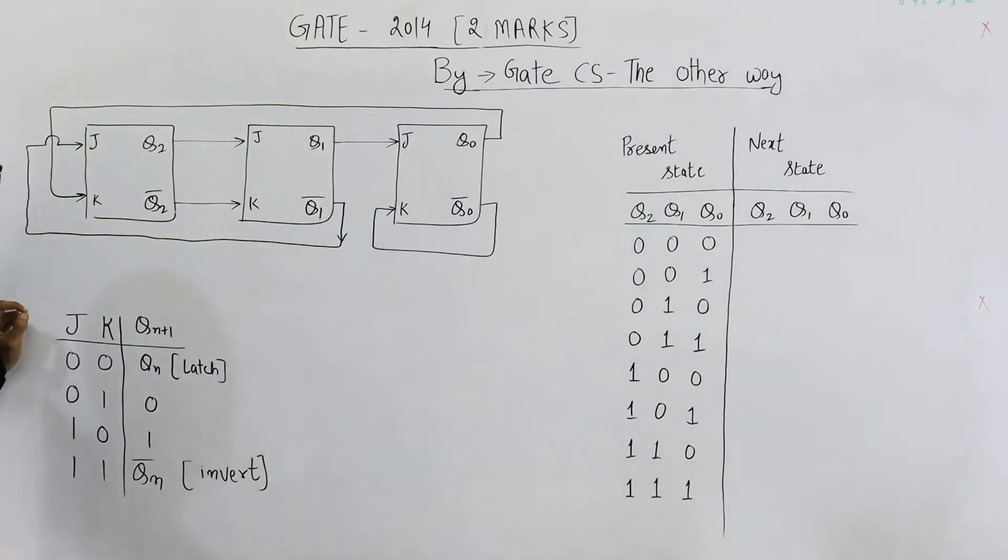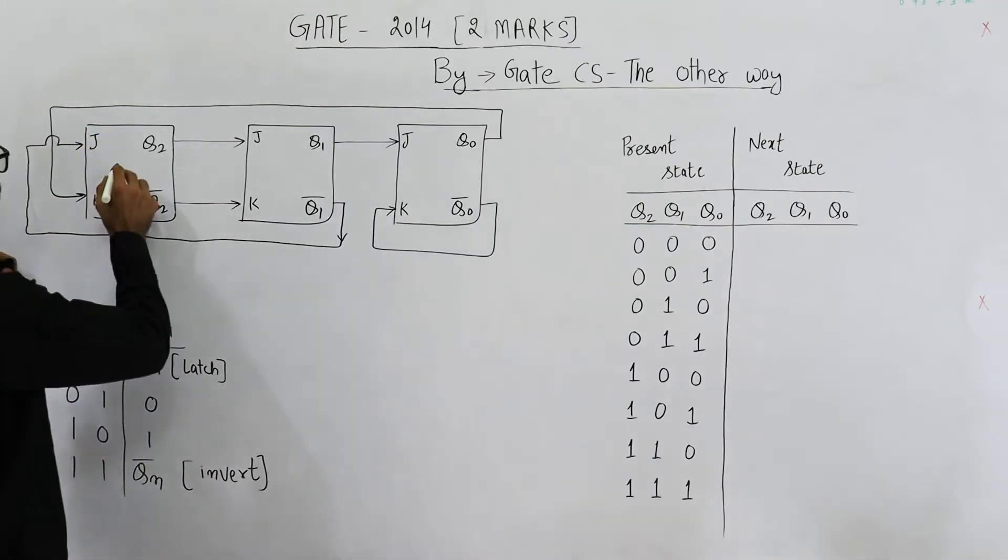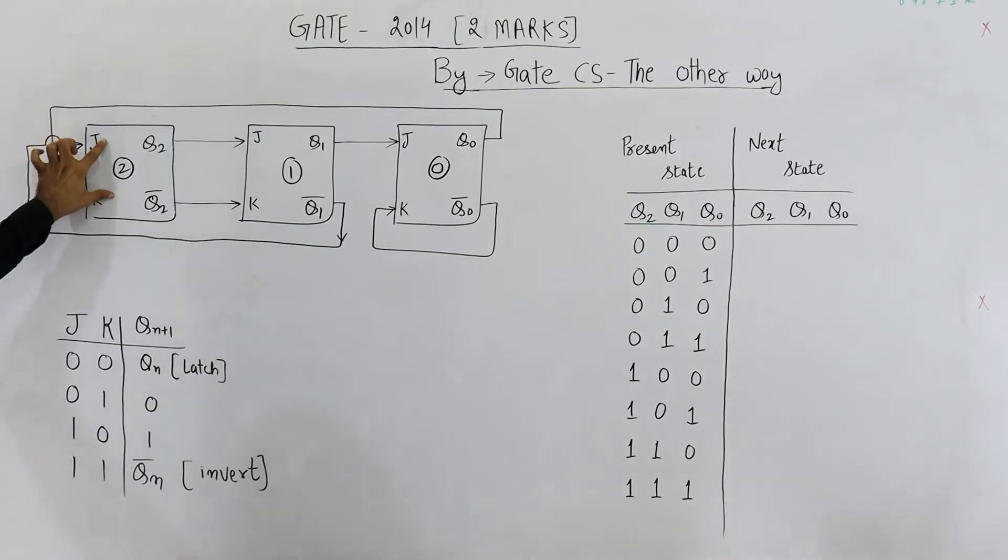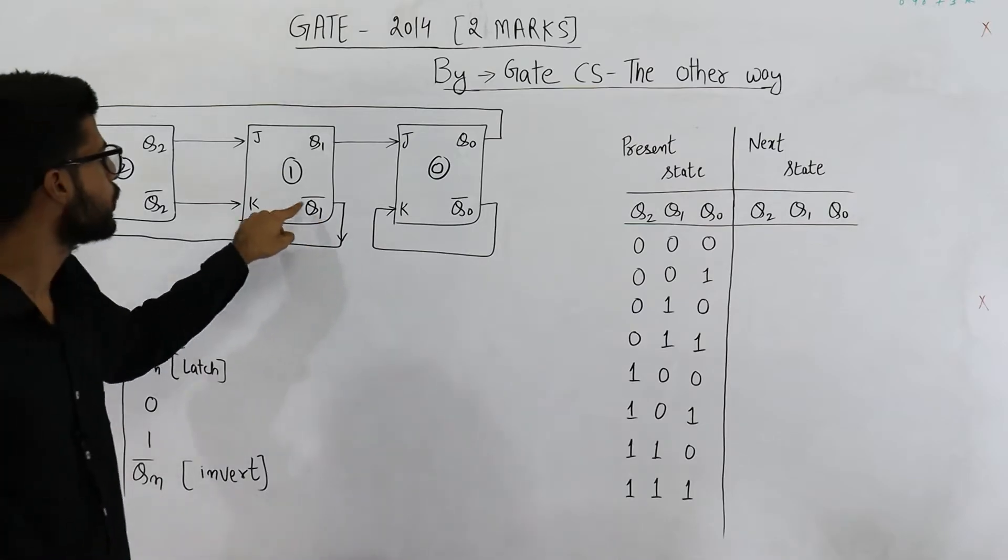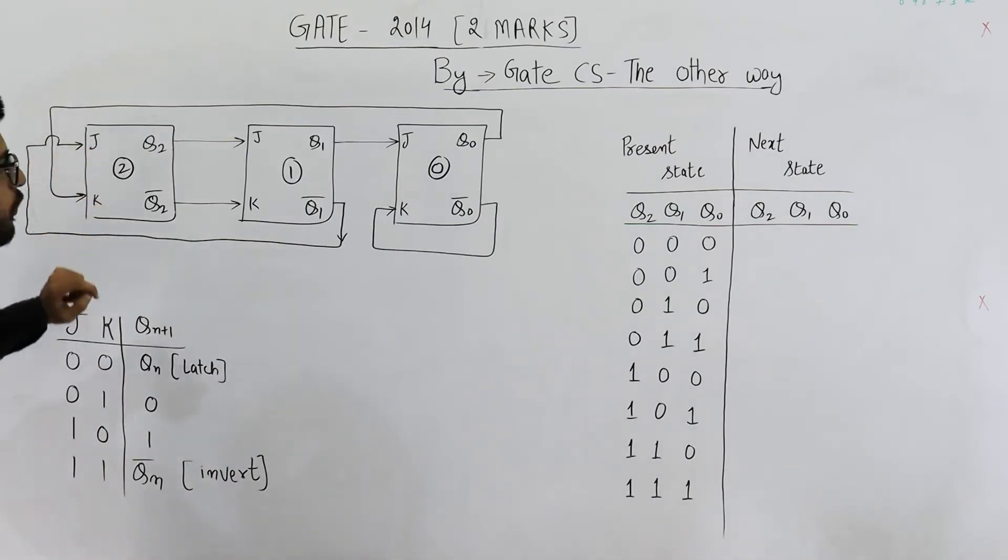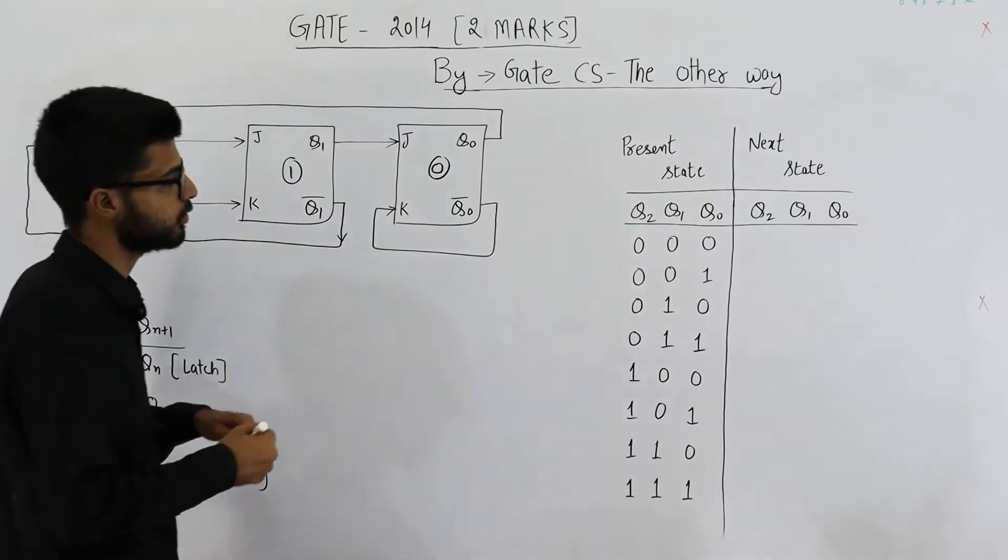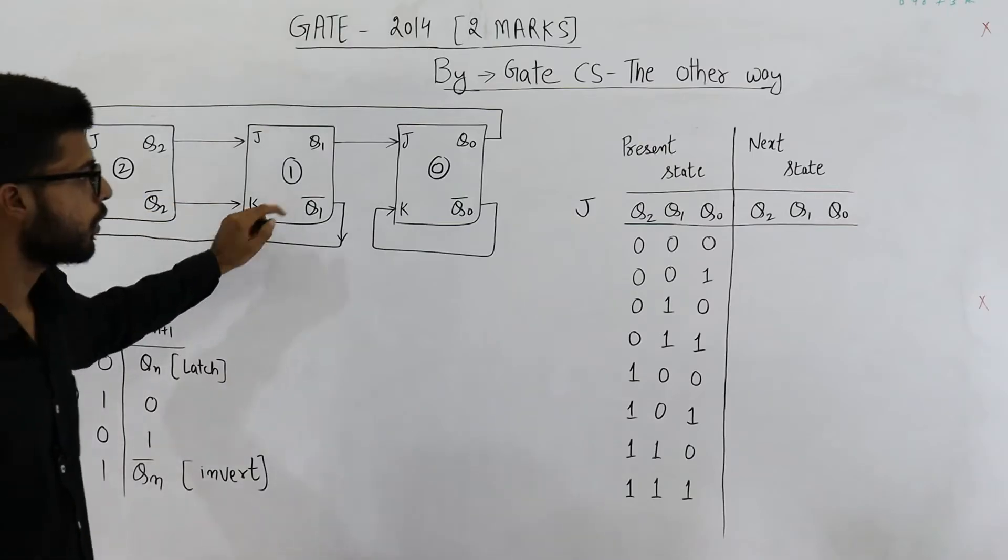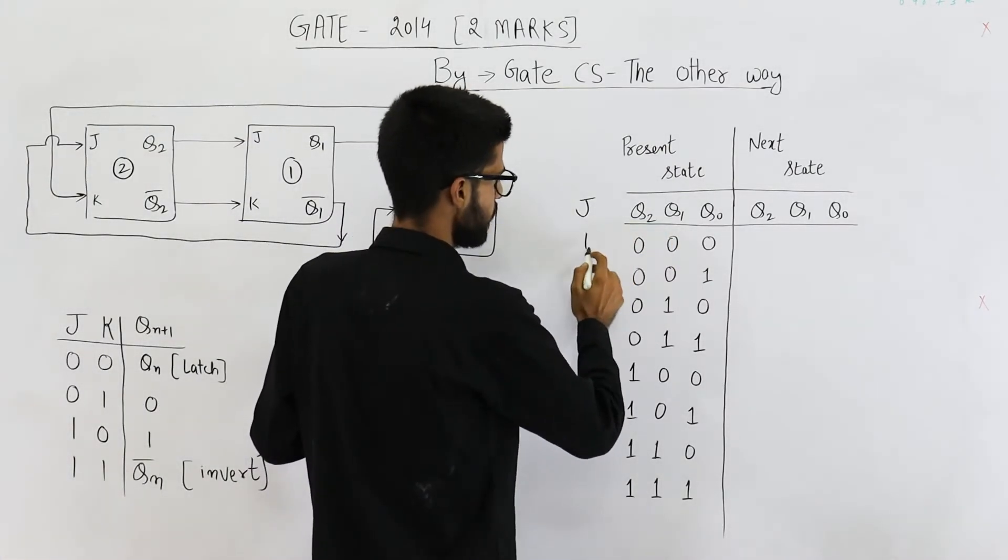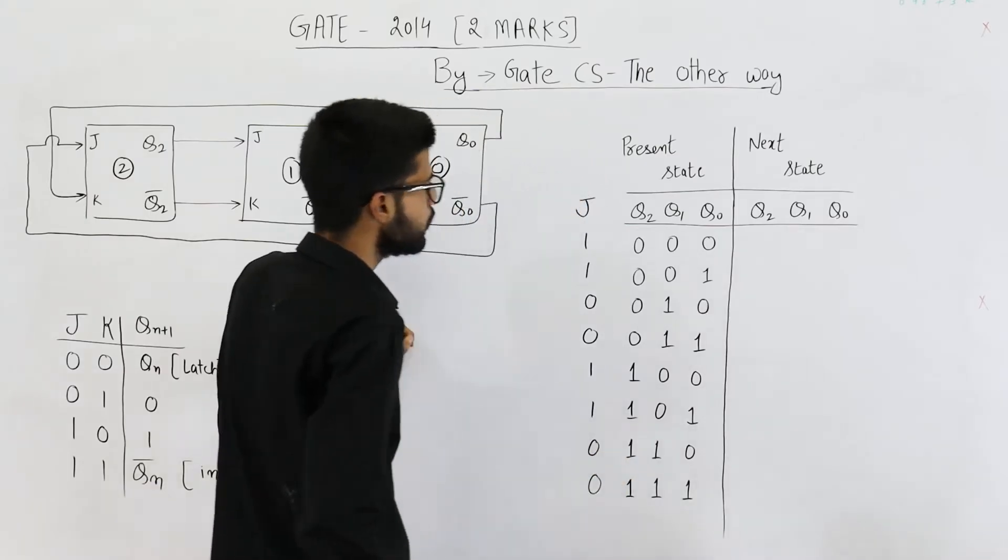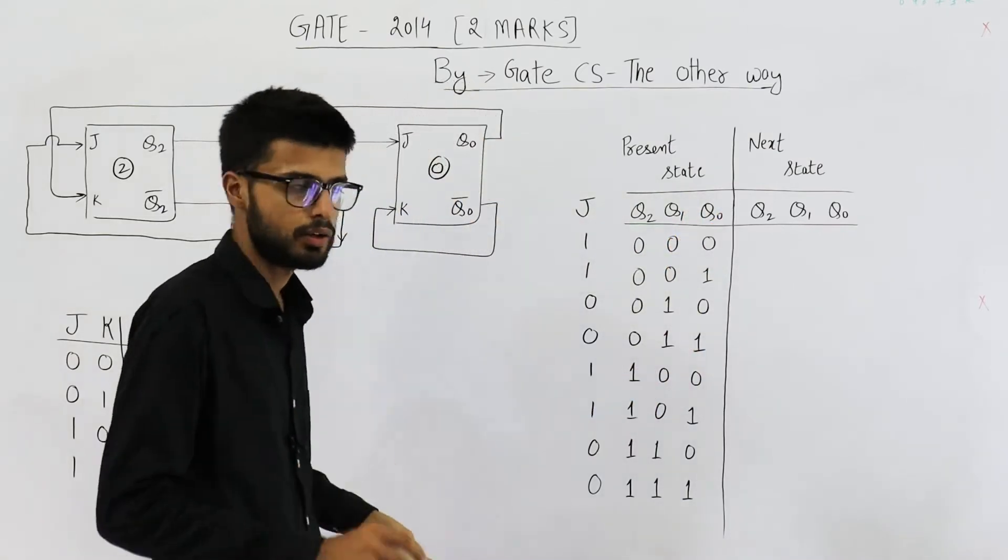This is the counter that they have given in the question. You can see this flip-flop. Let's name it 2, this one is 1 and this one is 0. What are the inputs J and K of this flip-flop 2? J is Q1 bar. Whatever is the current value of Q1, its complement is given as J input to flip-flop 2. Similarly, whatever is the current value of Q0, it is given as is to K input of flip-flop 2. So let us write these values of J and K.